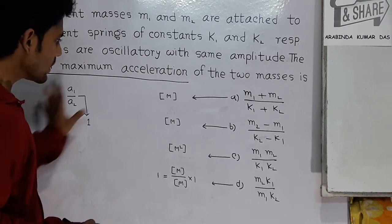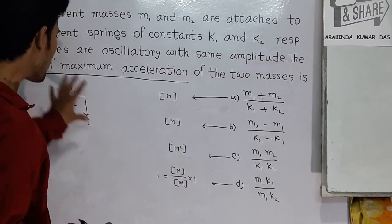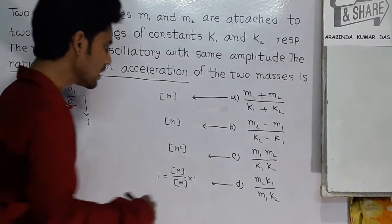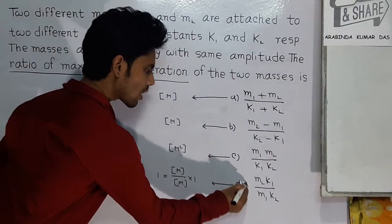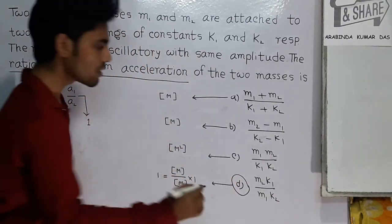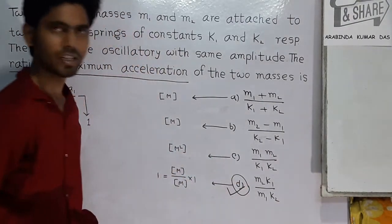Now it is clear that the dimension of option D matches the required dimensionless ratio. So the answer is option D.